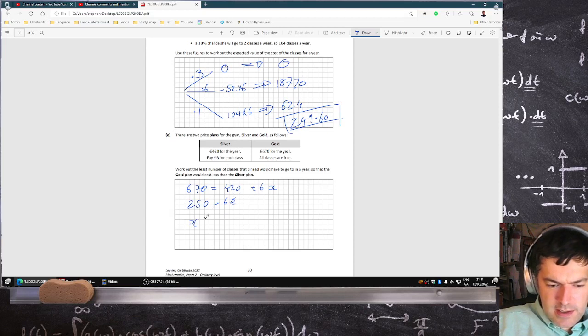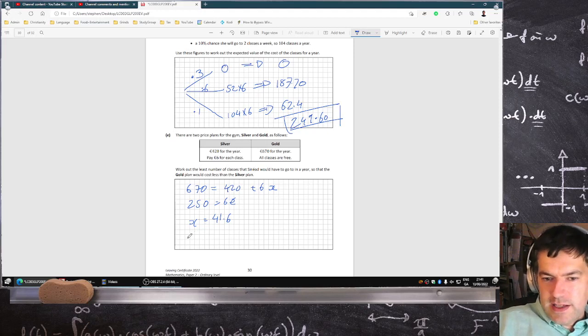So take away €420, you get €250 equals 6x, so x equals 41.6. And you can't have 41.6, so if x is 42, the silver will cost more than the gold.